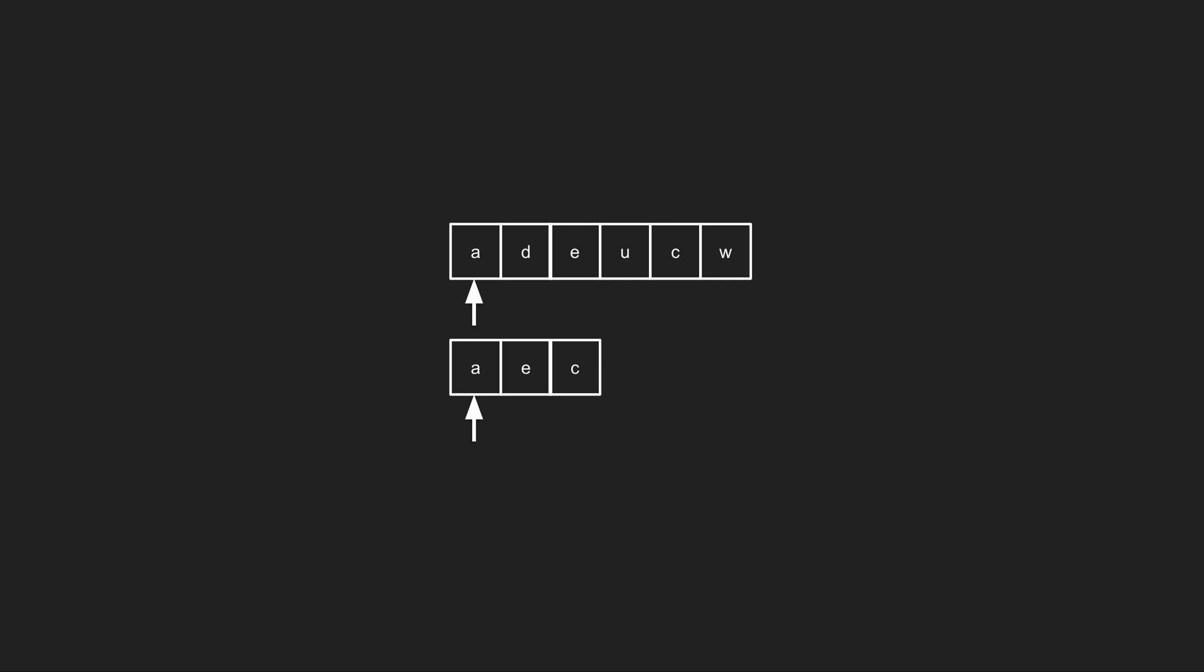For example, in this case a equals a, so we move both pointers. Next we compare d and e. d is not equal to e, so we move only the pointer in the m string.